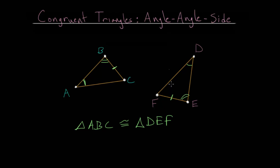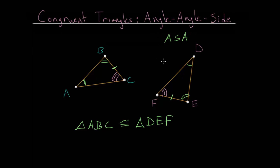There are a couple different ways to look at this relationship. One is that this is essentially a special case of the angle-side-angle congruence rule, since if we know two angles in a triangle, we can find the third angle. That can be found since the angles in a triangle add up to 180 degrees. So if you know two of them, you can set up an equation, call this X, add those together, set it equal to 180 degrees, and solve for that missing angle. Therefore angle C and angle F must be equal, and we have angle-side-angle — so angle-angle-side is really just a special case of angle-side-angle.